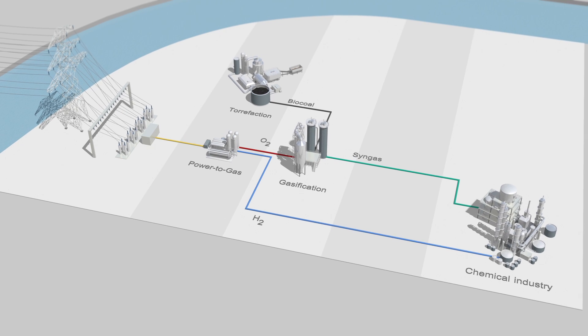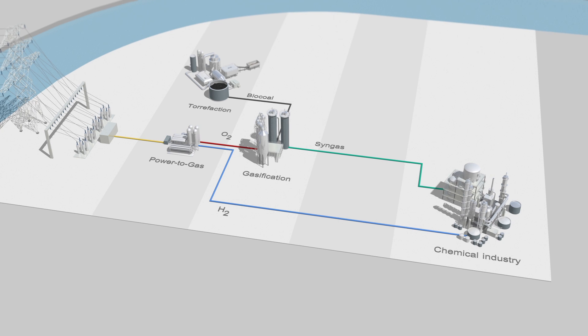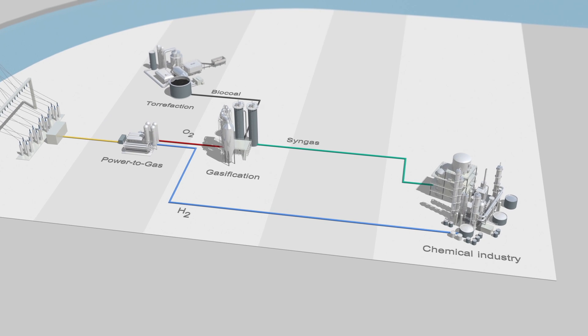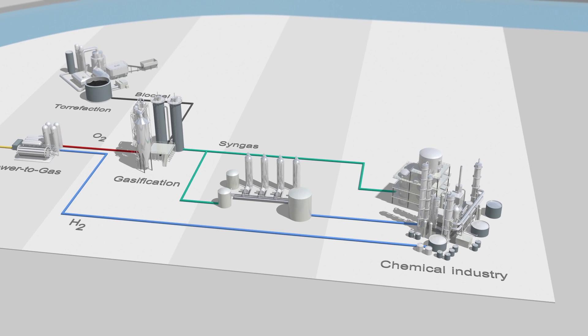Firstly, syngas itself is a green feedstock for many processes in the chemical industry. Secondly, also at this stage, syngas can be converted into hydrogen to be used in that same industry.